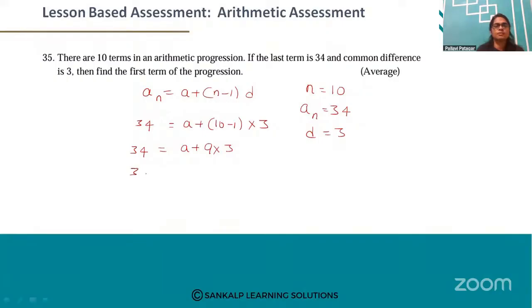So 34 is equal to a plus 27. So a is equal to 7. The first term of the progression is 7.